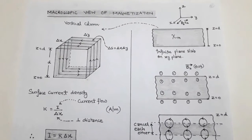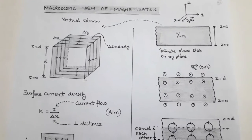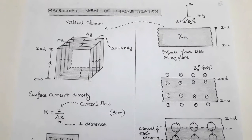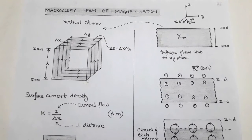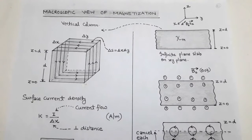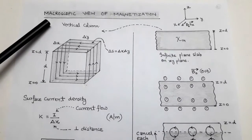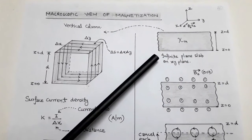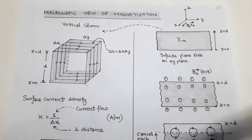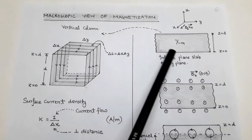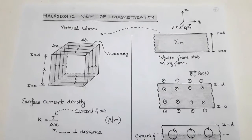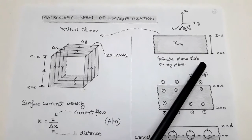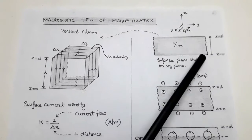The topic is macroscopic view of magnetization. In the last video, we talked about the microscopic view of magnetization in which we discussed atoms. Here we talk about the macroscopic view, where we take a magnetic material of infinite dimension. We take a magnetic material having a magnetic susceptibility psi_m, with infinite dimensions, placed on the xy plane.